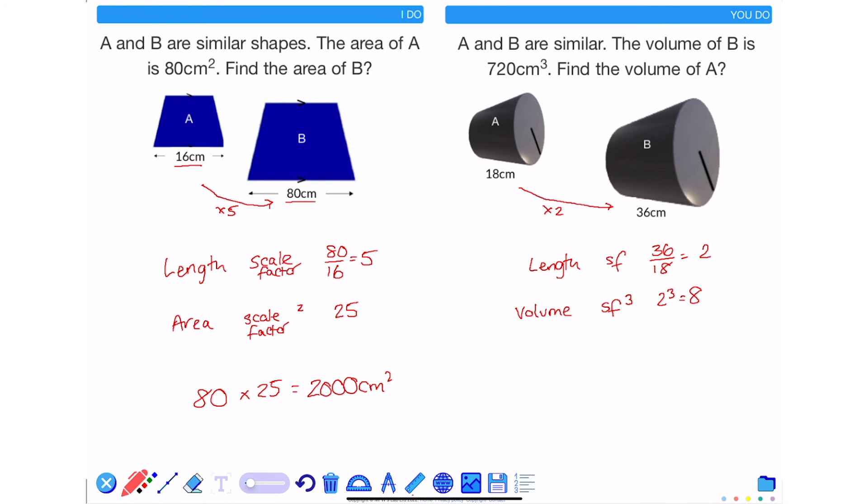So if I knew the volume of A, I would multiply that by 8 to give me the volume of B. But I've got the volume of B, which is 720. To work out the volume of A, I would divide 720 by 8 to give me 90 centimeters cubed. This is the volume of A.